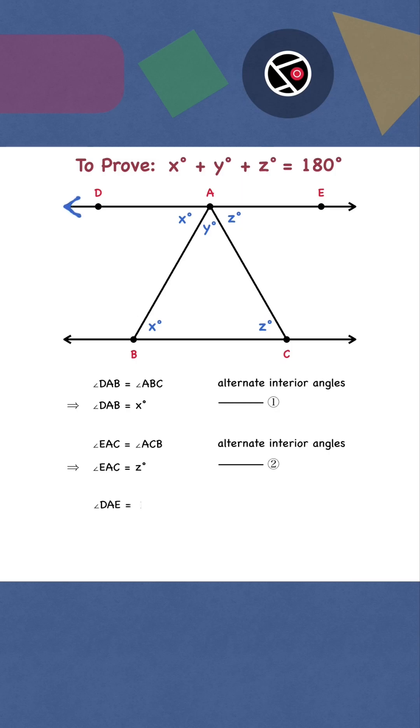Finally, DAE is a straight angle. Angle DAB plus angle BAC plus angle EAC is 180 degrees. Therefore, x plus y plus z equals 180 degrees. We are done.